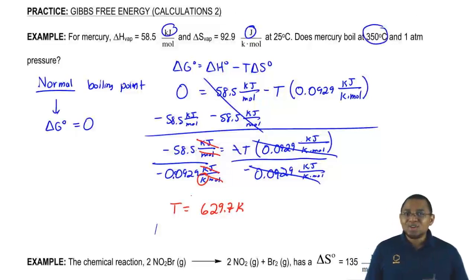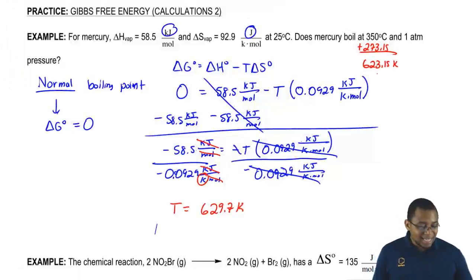So that is the normal boiling point. That means the temperature has to be at minimum this temperature for mercury to begin to boil. So we go back to the 350 degrees Celsius. We have to change it to Kelvin, so add 273.15. We get 623.15 Kelvin. And we can see that this temperature here is not high enough. It has to be a minimum of 629.7, the temperature we calculated earlier.